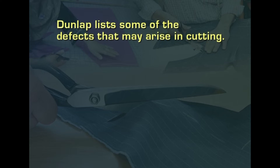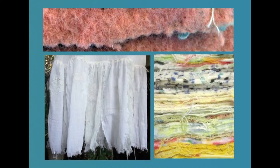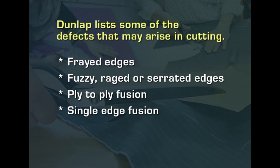Dunlap lists defects that may arise in cutting. Frayed edges — fabrics not very firm fray after cutting, making pieces smaller; the amount of fraying depends on fabric finish, construction, and improper or blunt cutting tools. Fuzzy, ragged, or serrated edges may come from faulty knife edges such as burrs, chips, or dullness. Ply-to-ply fusion — single plies whose cut yarn ends are fused to form a hard, brittle rim on the cut edge. Single edge fusion consists of a single ply whose cut ends fuse to form a brittle rim, which is undesirable if it impedes sewing manipulation.